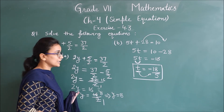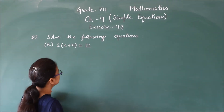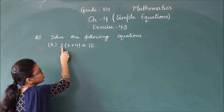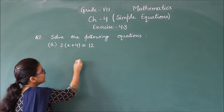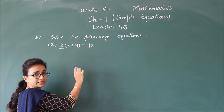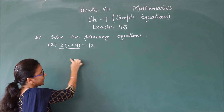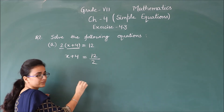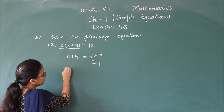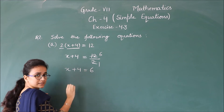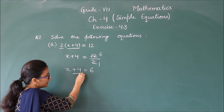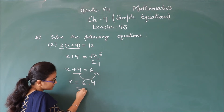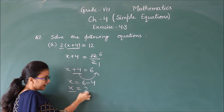Similarly you can do the other parts. Now let us do question second. Next second question is: solve the following equations. इसमें भी equations को solve ही करना है। देखो ध्यान से — first part है: 2 bracket में x plus 4 is equals to 12. सबसे पहले इस 2 को right में shift करते हैं — यह 2 पूरी bracket के साथ multiply में है, तो right में जाके divide में। तो x plus 4 is equals to 12 upon 2, that is 6. अब x के साथ plus में है 4; right में shift करने पर minus 4. तो x is equals to 6 minus 4 is equals to 2. Variable separate हो गया, x की value आ गई: 2.